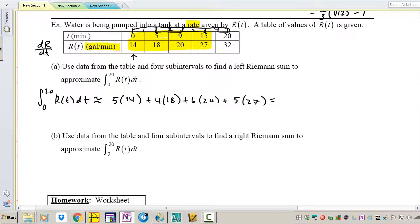And then I don't have a calculator but let me go ahead and do my very best to do this. 5 times 14 is 70, 4 times 18 is 72, 6 times 20 is 120, 5 times 27 is 135. And then this becomes 142, this becomes 155, so my total answer is 297.